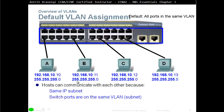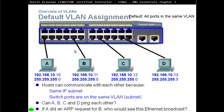You can see from the subnet mask that all devices share the same network 192.168.10, shown in darker blue. They can all communicate because they are in the same subnet and the same VLAN. If A, B, C, and D try to ping each other, they should be able to, since they all have network ID 192.168.10. If PC-A sends an ARP request for PC-B, that ARP is a broadcast, asking 'what is the MAC address of 192.168.10.11?' — and since they're in the same VLAN, everybody will see it.